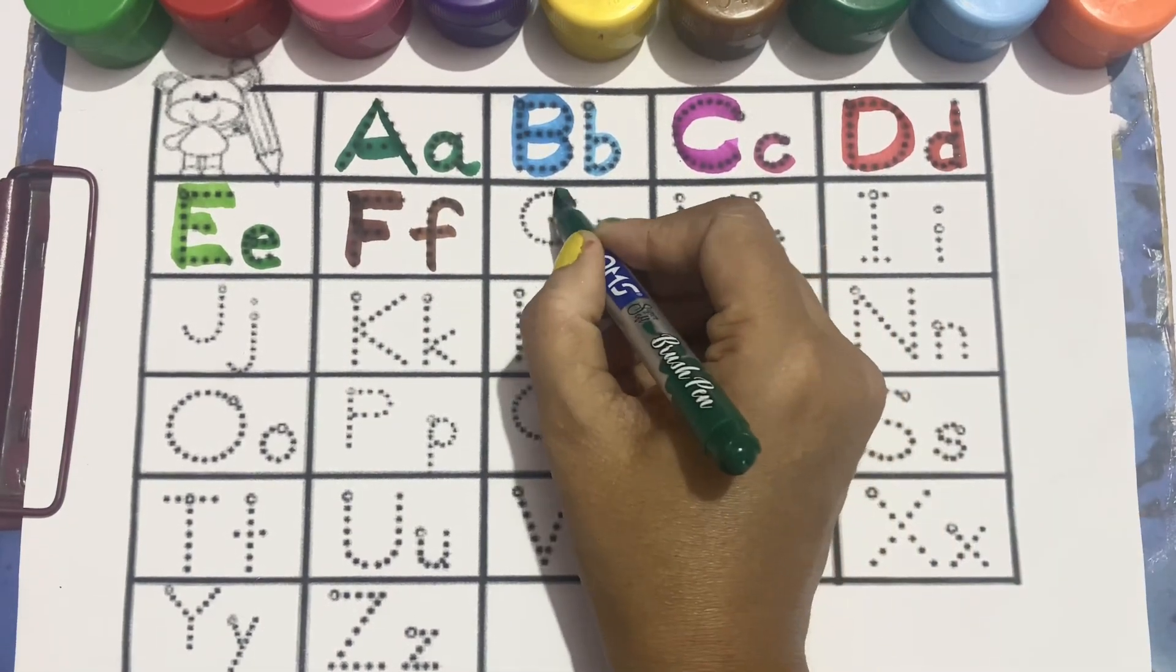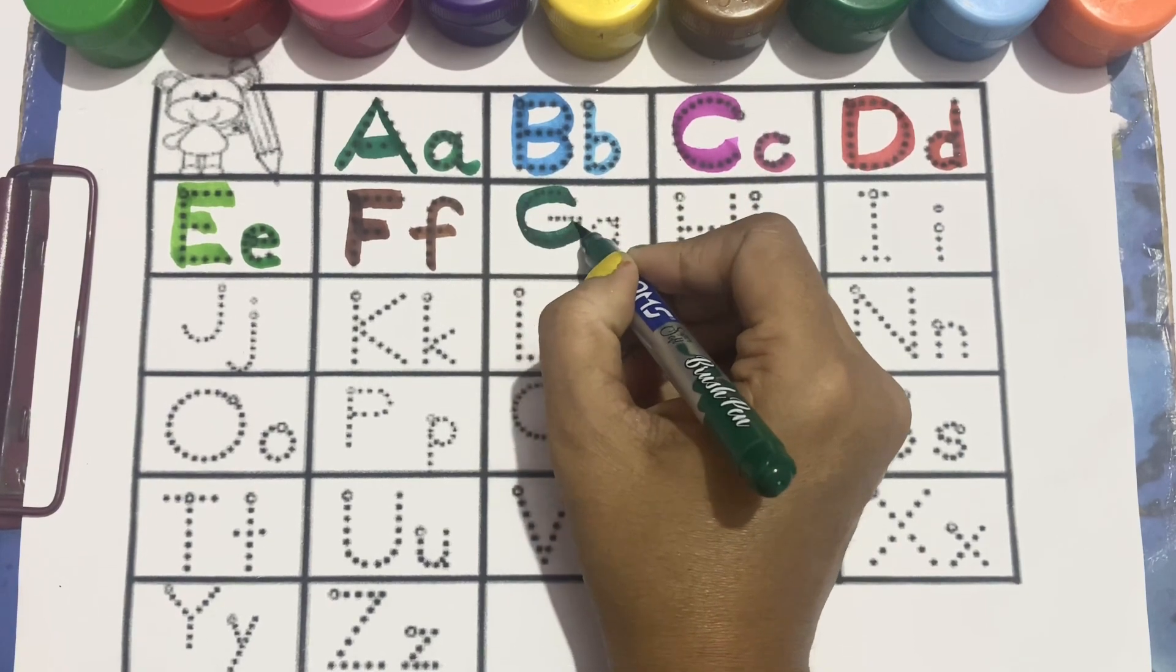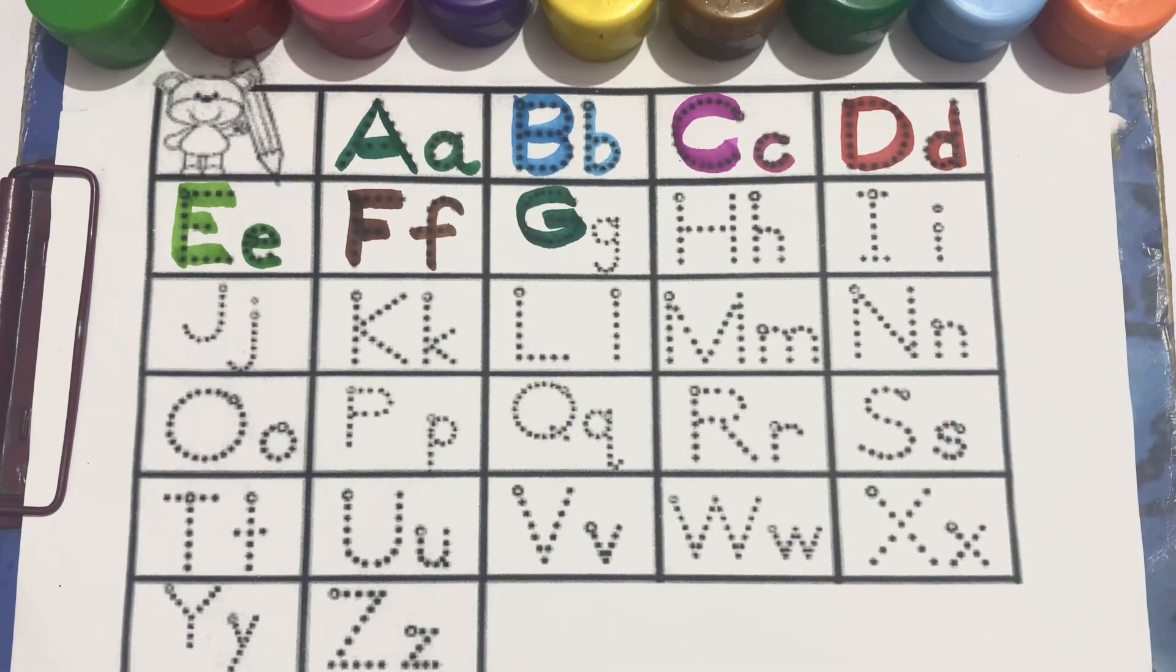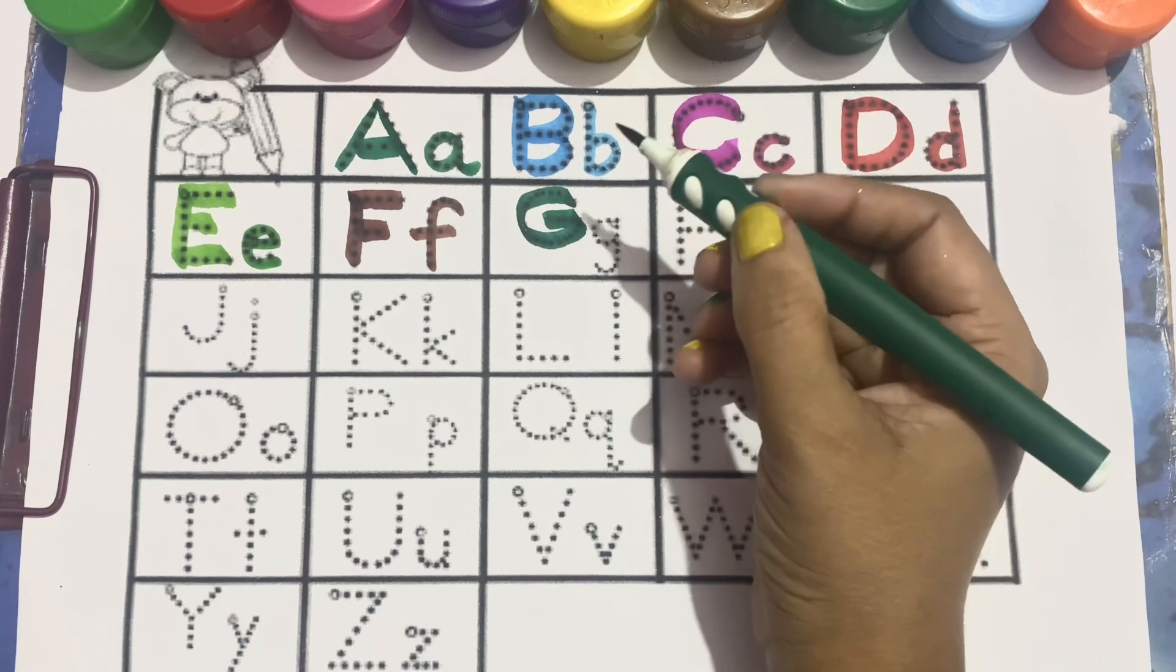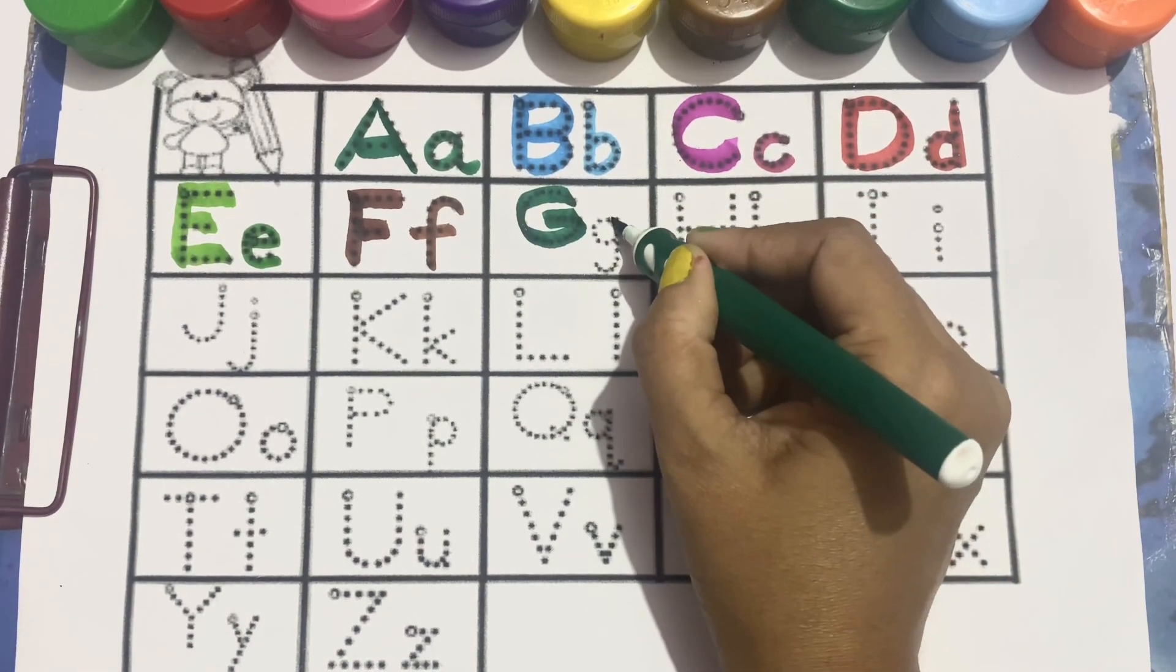Green color, G, capital G. Now, we will write small g.